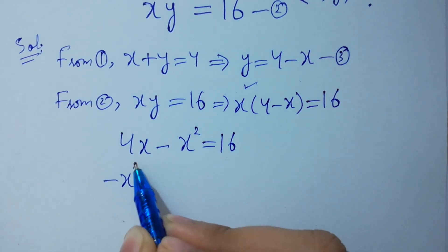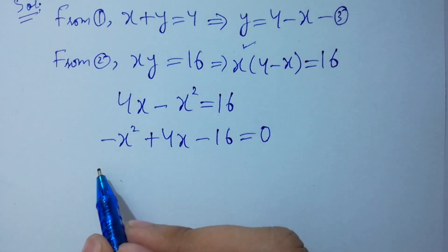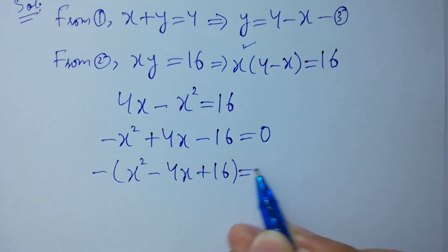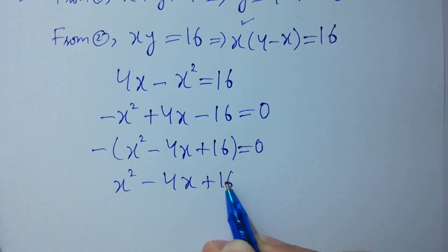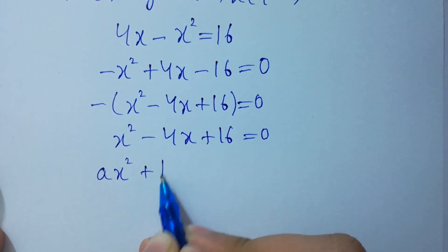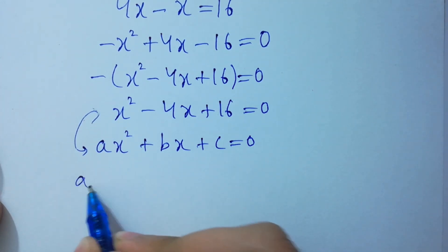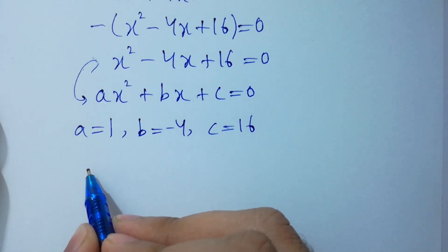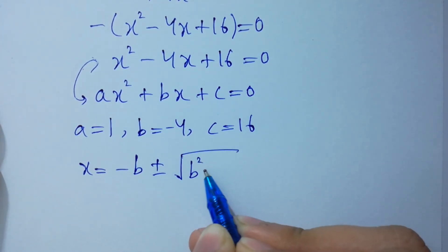So we have minus x squared plus 4x minus 16 on the left side equal to 0. Taking out the common minus, we get x squared minus 4x plus 16 equal to 0. This equation is like the quadratic equation ax squared plus bx plus c equal to 0. By comparing: a equal to 1, b equal to minus 4, c equal to 16.